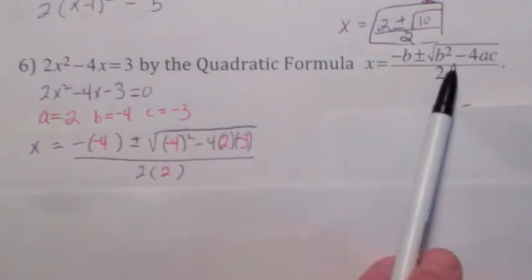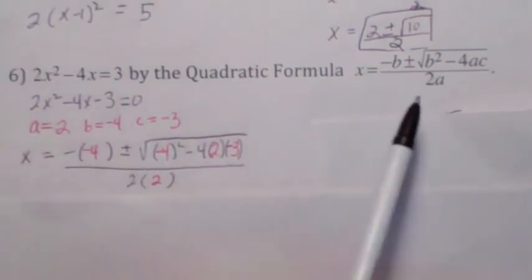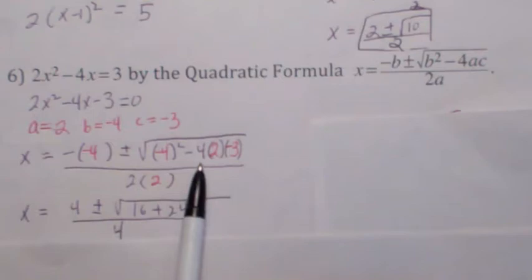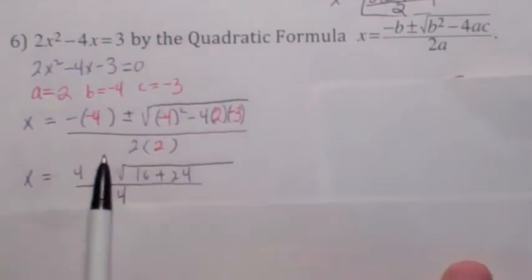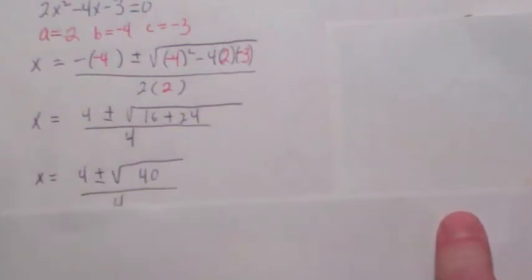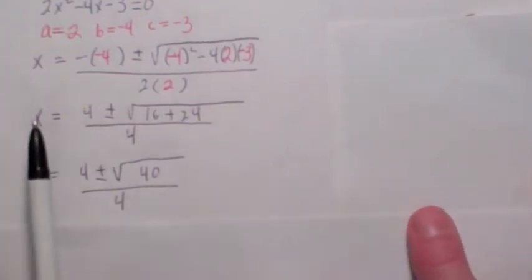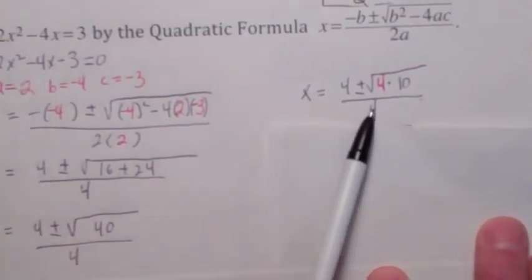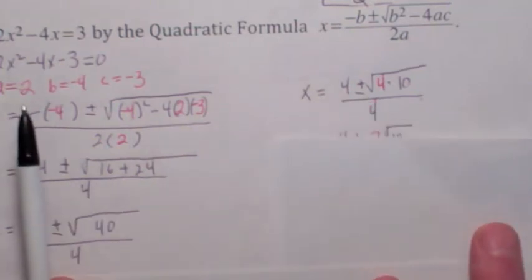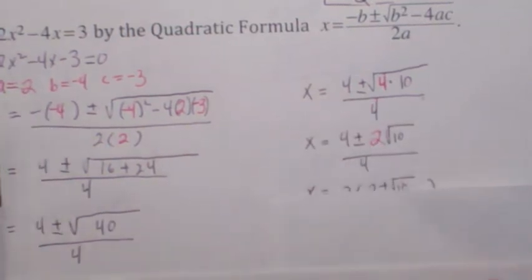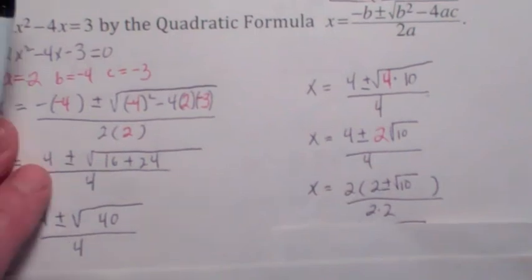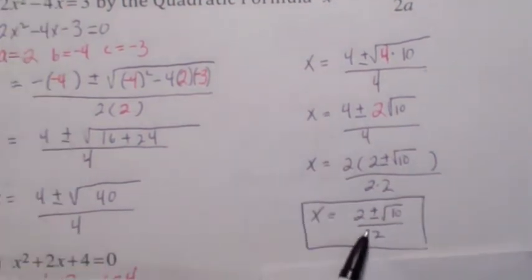By the way, this thing inside the square root is called the discriminant. Inside the square root the discriminant becomes 16 plus 24, which becomes 40. Isn't 40 equal to 4 times 10? So you can write this as 4 plus or minus square root of 4 times 10, and then the 4 can come out of the square root and become a 2. Then you can factor a 2 out of the numerator, a 2 out of the denominator, and cancel those 2's. So your final answer is x equals 2 plus or minus square root of 10 over 2 — exactly what we got before.